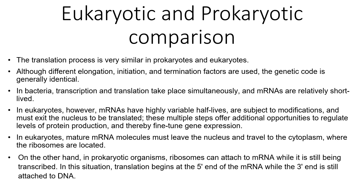However, in eukaryotes, mRNAs have highly variable half-lives, have modifications, and must exit the nucleus to be translated. These multiple steps offer additional opportunities to regulate levels of protein production and fine-tune gene expression, such as 5' capping, poly-A tail addition, and alternative splicing. In eukaryotes, mature messenger RNA molecules must leave the nucleus and traverse the cytoplasm where ribosomes are located. In prokaryotic organisms, ribosomes can attach to messenger RNA while it's still being transcribed — translation begins at the 5' mRNA while the 3' end is still attached to DNA.